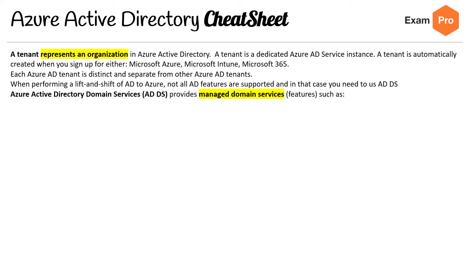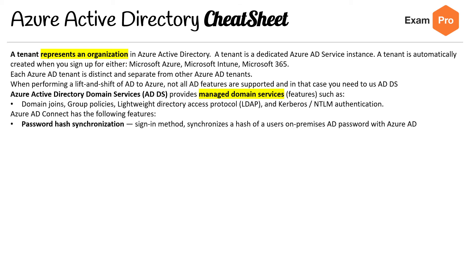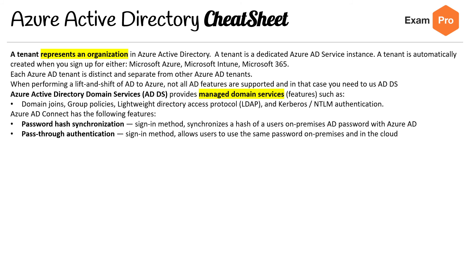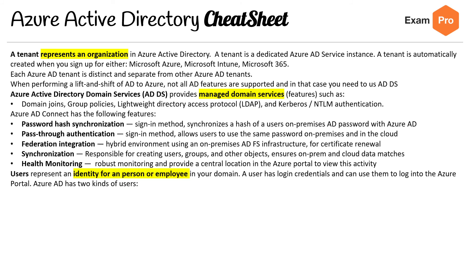ADDS provides managed domain services such as domain joins, group policies, and lightweight directory access. Azure AD Connect has the following features: password hash synchronization, pass-through authentication, federation integration, synchronization, and health monitoring. Users are an AD object — the identity of a person or employee in your domain. A user has login credentials and can use them to log into the Azure portal.